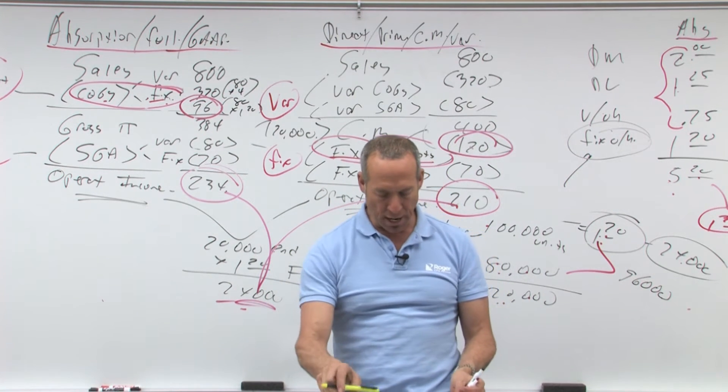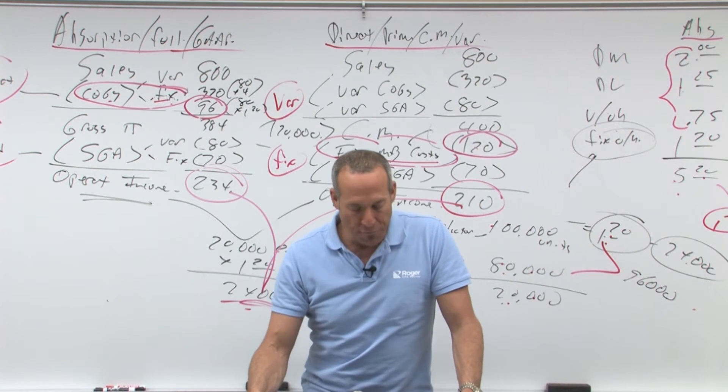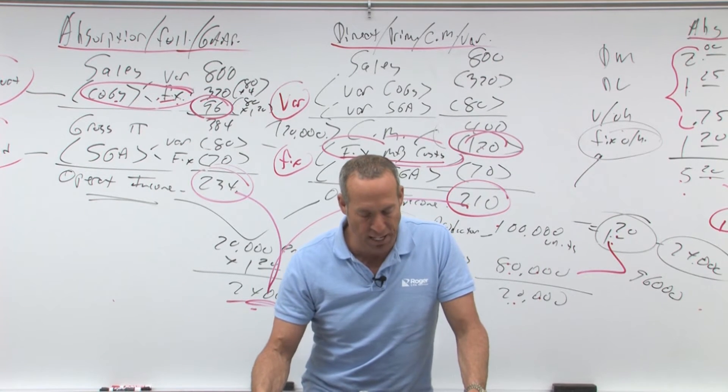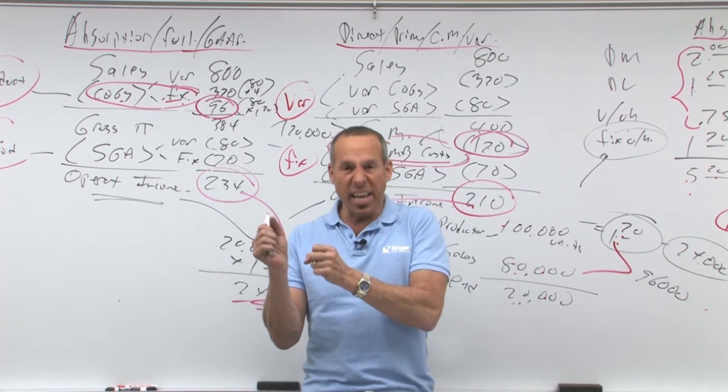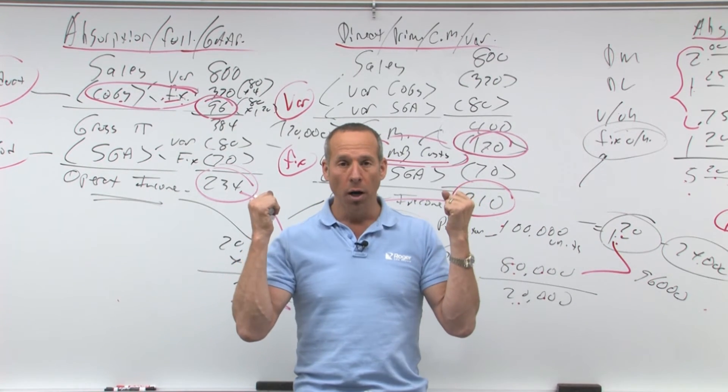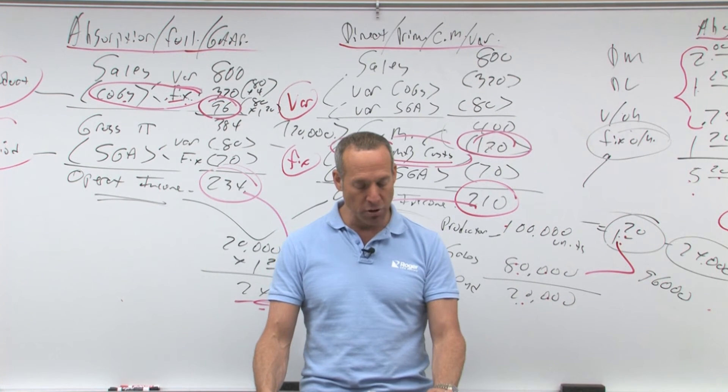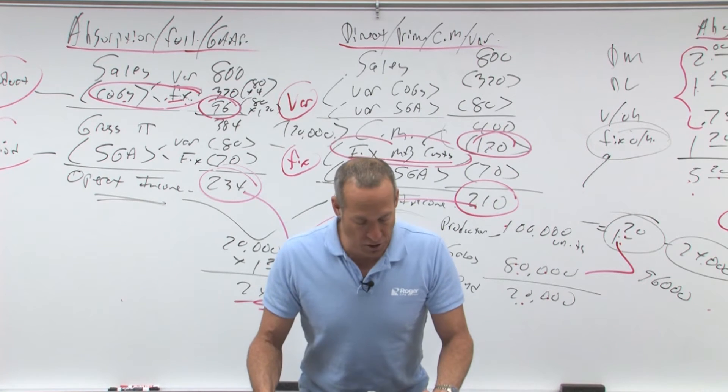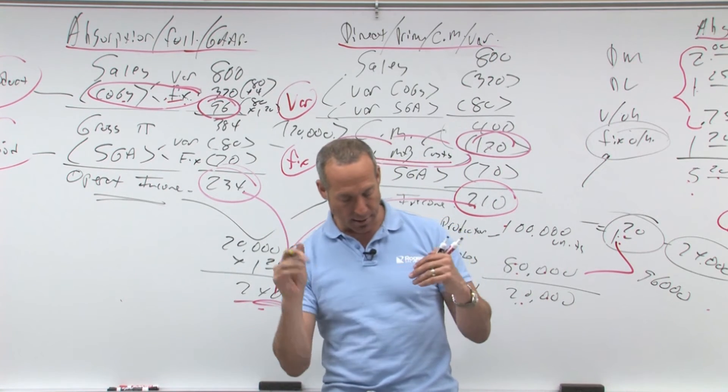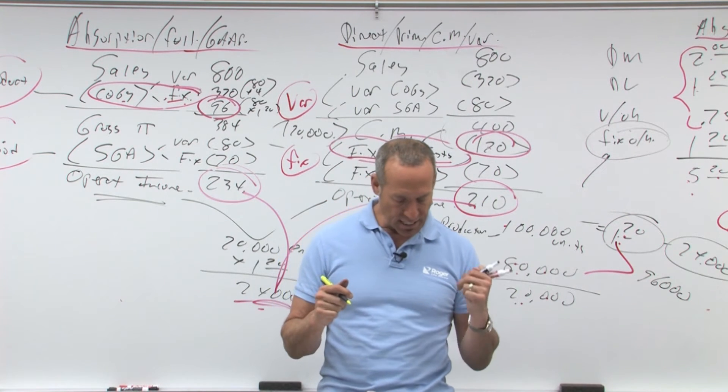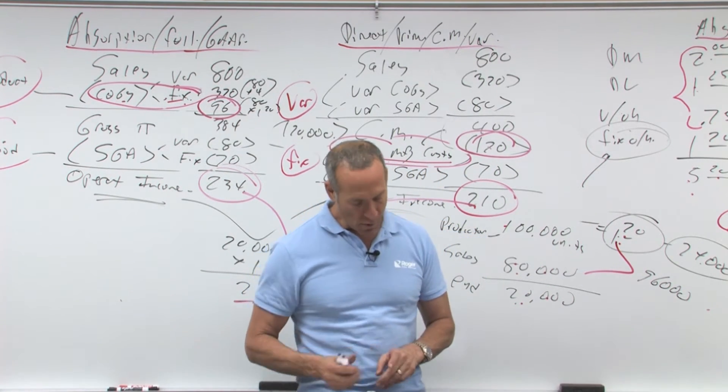whereas under variable, fixed manufacturing is expensed. Under absorption, such amounts are treated as a product cost and inventory. The treatment of fixed manufacturing overhead often results in different levels of income between absorption and variable. The differences are timing differences which result from recognizing the fixed manufacturing overhead as an expense. Here's the timing difference. Under absorption, they get expensed when they're sold. Under variable or prime or contribution, they get expensed as incurred. So variable, we expense it in the period incurred. Absorption in the period in which the units to which fixed overhead has been applied are sold. Then there's that little picture. It says direct materials, inventoryable costs. It says yes, yes. Direct labor, yes, yes. Overhead, yes, yes. Variable. Fixed, yes. No. SG&A, no, no. Right? If I wanted to add SG&A, no, no, because those are expensed under either.